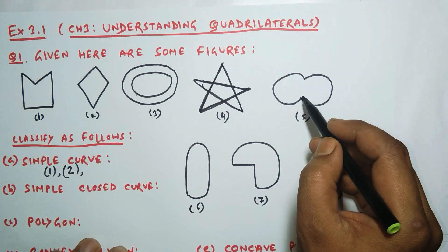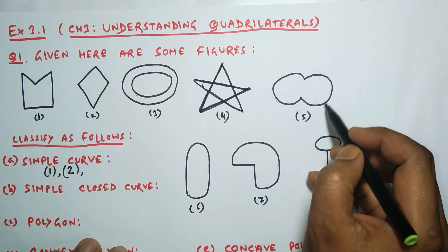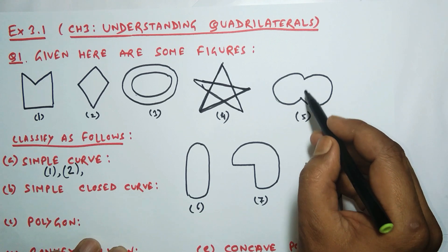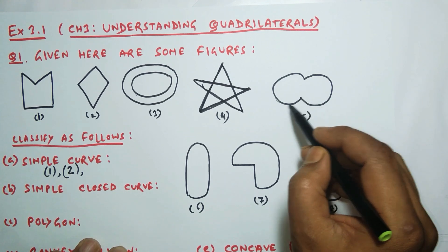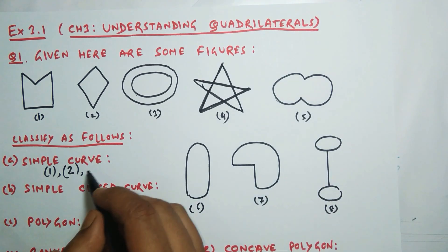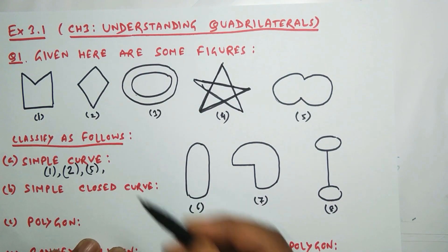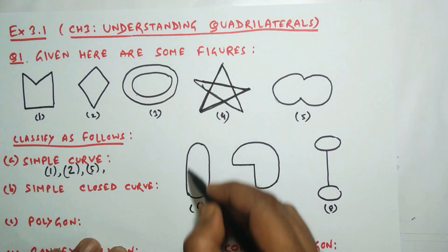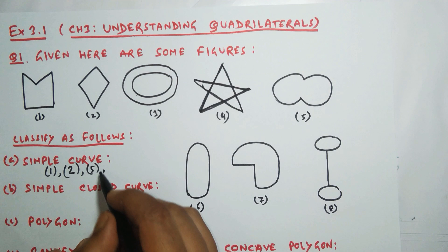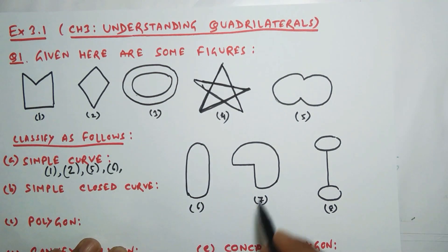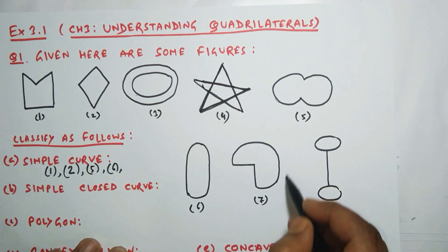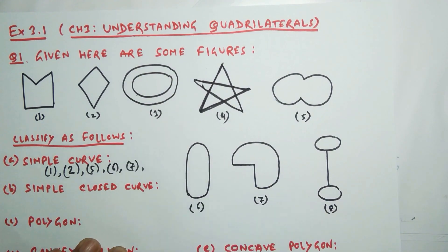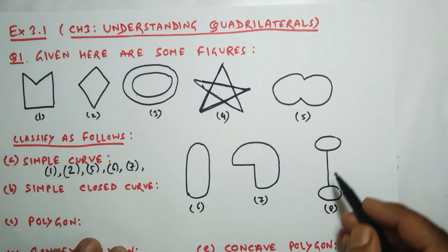Number five has gone like this but not intersected anywhere, so five is also a simple curve. Number six is a closed curve but not intersected, so it is also a simple curve. Number seven is also a closed curve but nowhere intersected, so seven is also a simple curve.